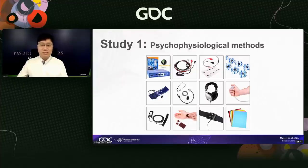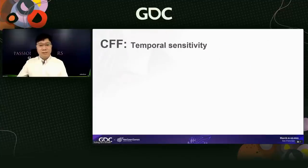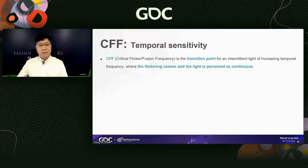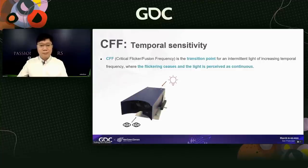We use these indicators to infer mental states. In this study, we chose two indicators relating to visual sensitivity to infer eye strain. The first indicator we use is CFF, or critical flicker frequency. It is one of the indicators we use when measuring for eye strain. Here we show the device we use to measure CFF — an LED light is mounted inside this device.